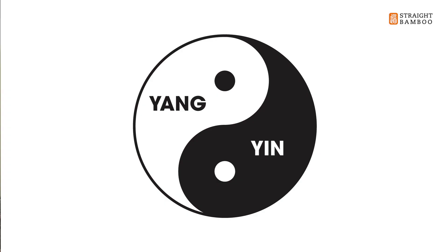Now let's have a look at the yin-yang symbol — the first symbol. It is a conceptual model to help us understand nature, understand ourselves, and the rhythms we're supposed to live in accordance with nature.